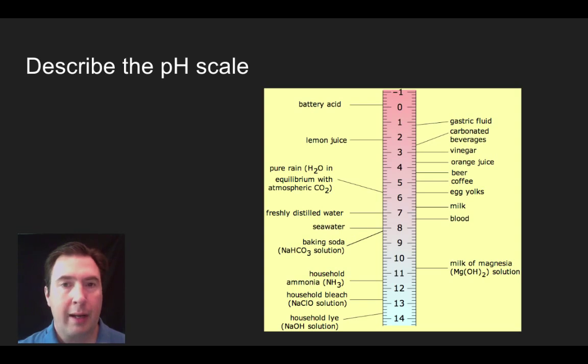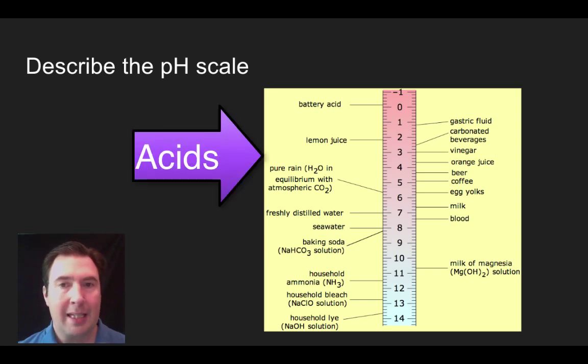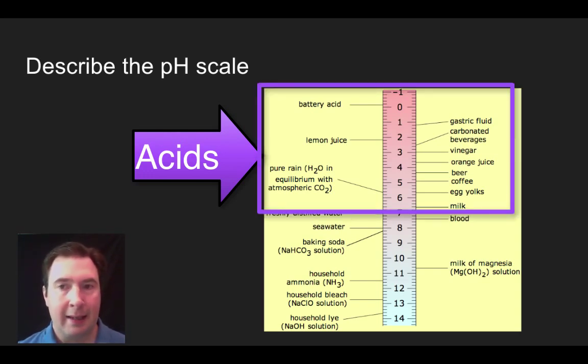If I was to create a solution that is going to give off hydrogens in solution, I'm going to make that acidic and I'm going to move up in numbers on this scale. And so what I see is that milk is slightly acidic. Egg yolks, a little bit more acidic as is pure rain, which tends to have a little bit of CO2 from the atmosphere, slightly acidic. Coffee, beer, orange juice, vinegar.